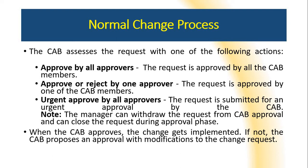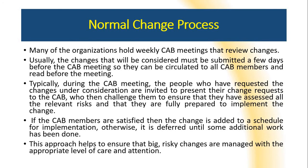The CAB assesses the request in the following ways: the change is approved by all CAB members, one CAB member rejects or approves the change, or it is submitted for urgent approval by all approvers. Change managers can also withdraw the request from the CAB, effectively closing the request for change. Normally in organizations, CAB meetings are arranged on a weekly basis for reviewing changes.